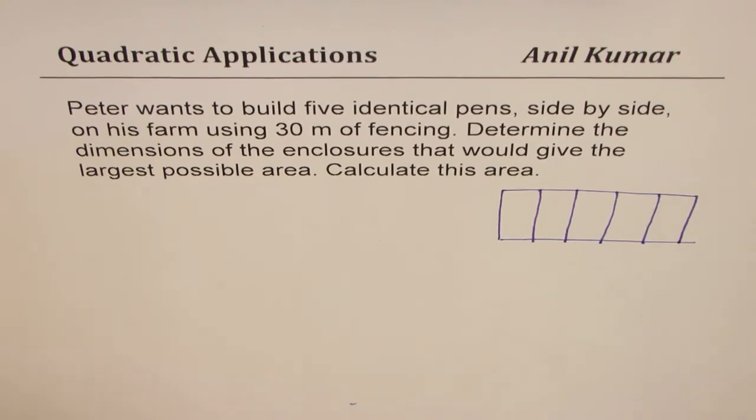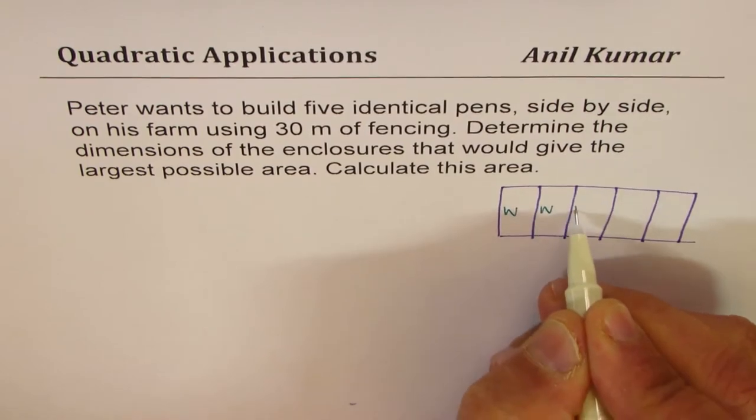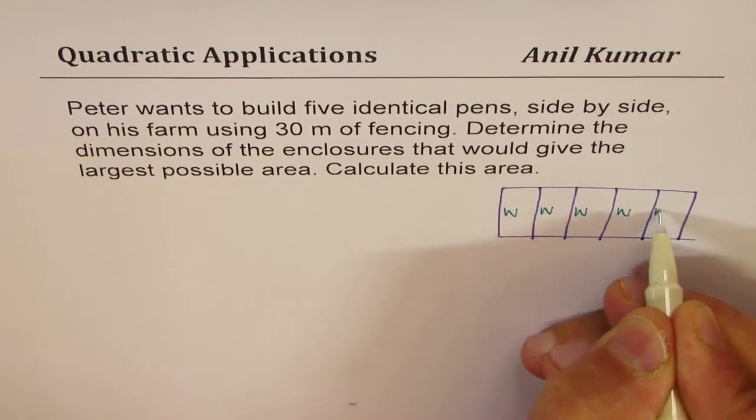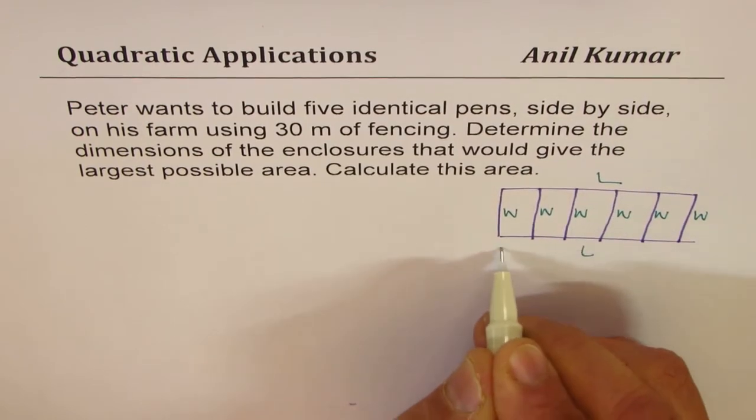Let us say their width is W. That is their width of each. And the length we'll keep L.